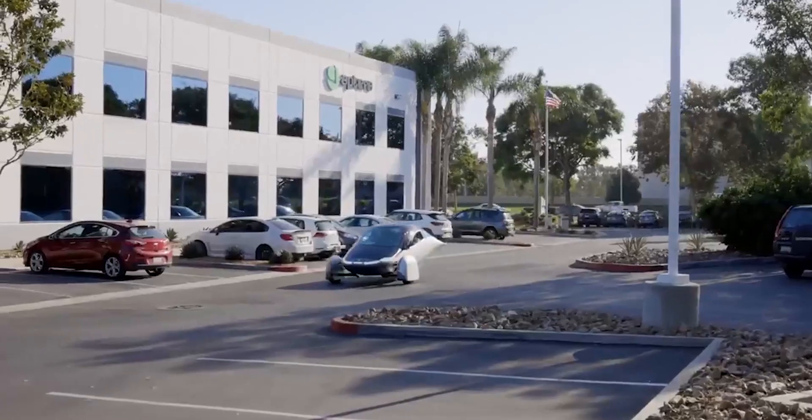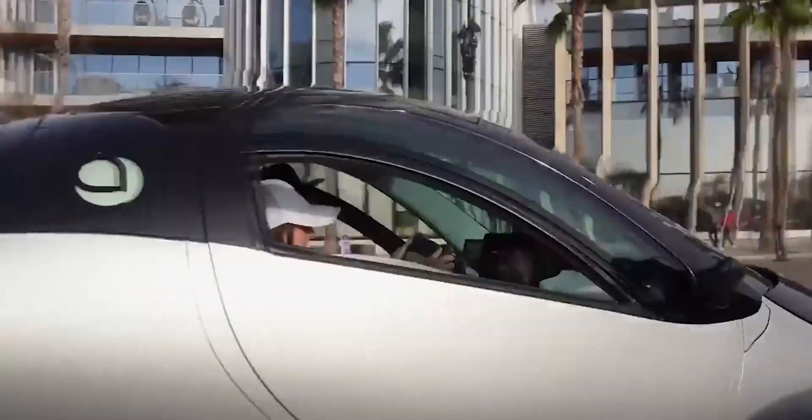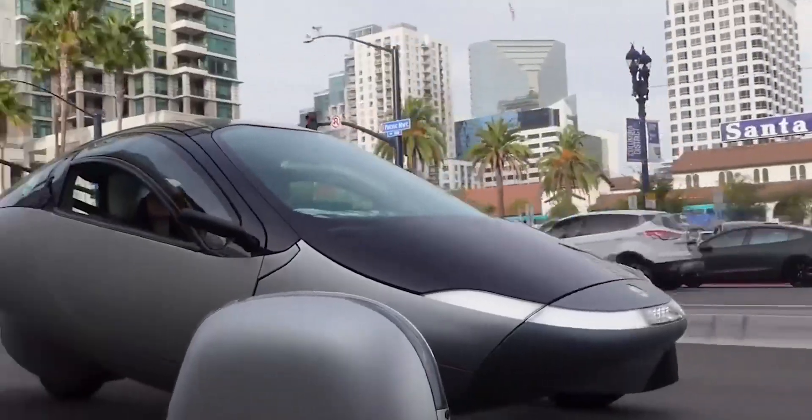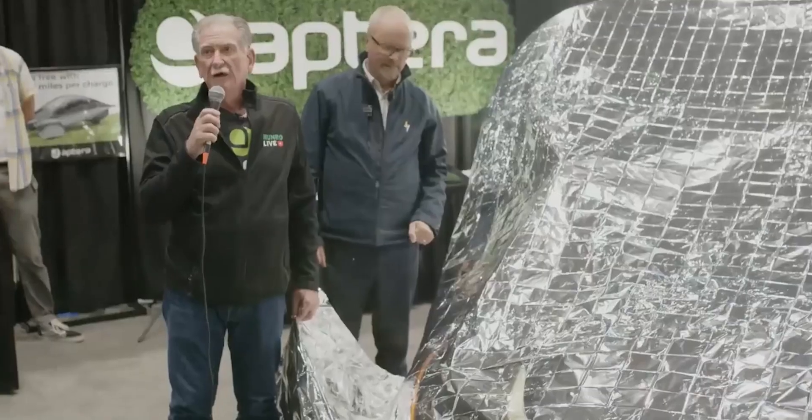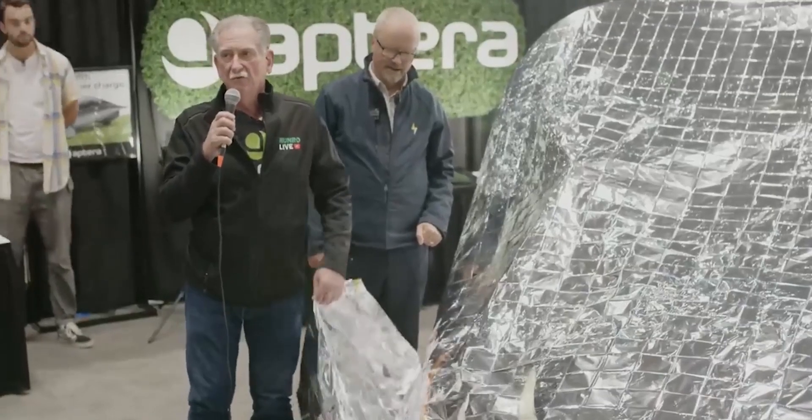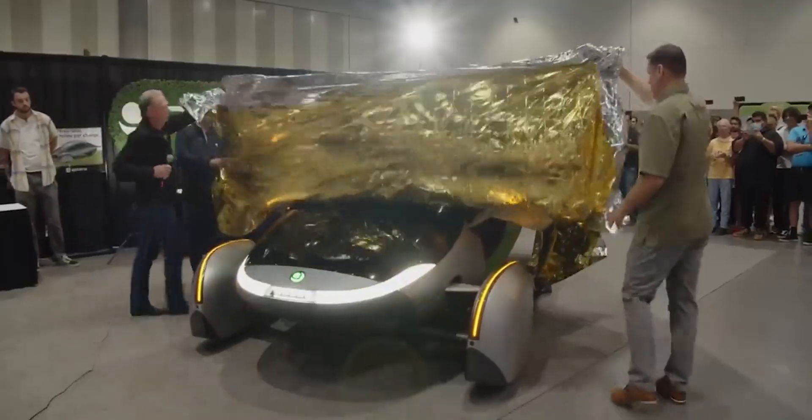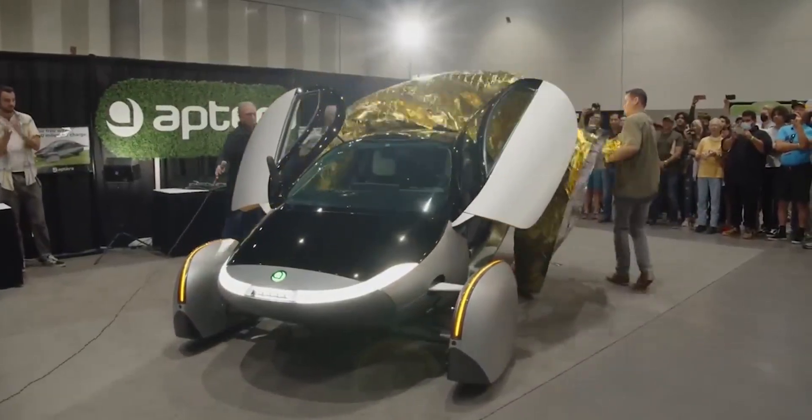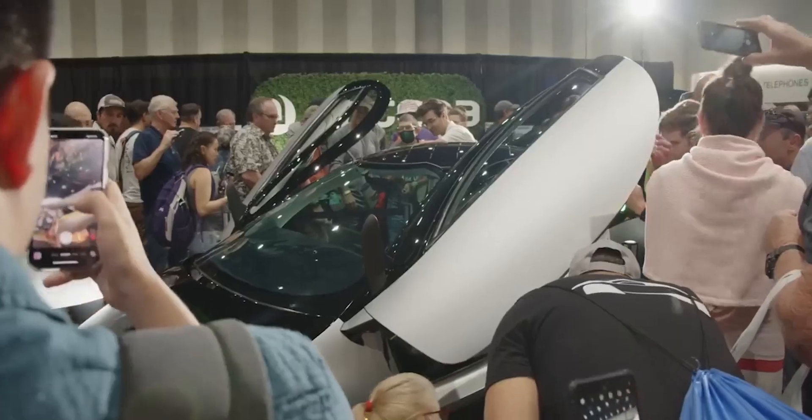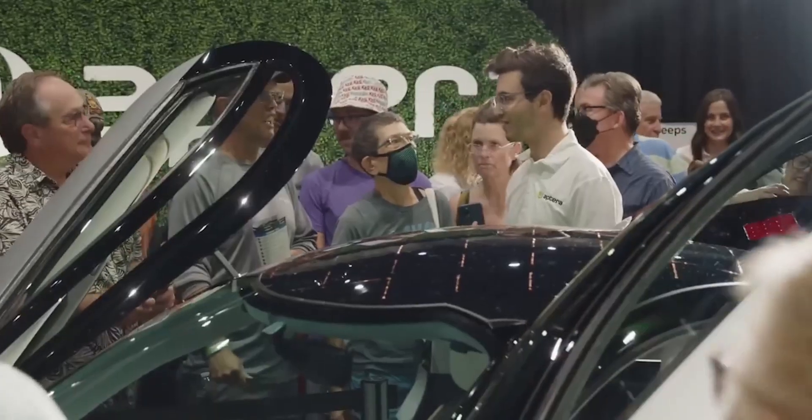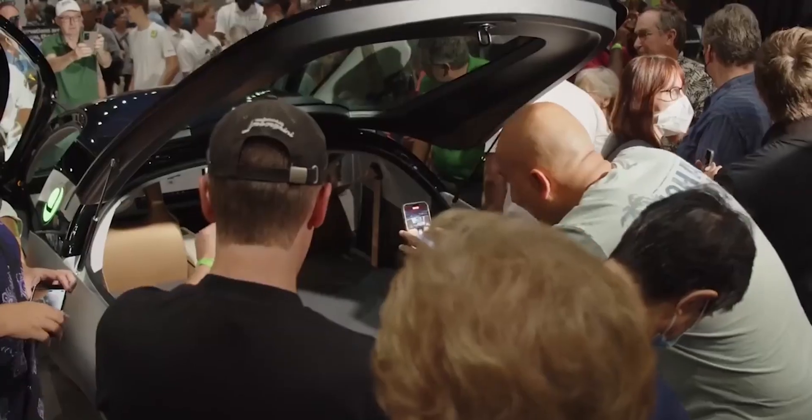But solar technology continues to advance just like battery technology. Today's solar cells on the mass market top out at around 24% efficiency, with 30% efficient cells coming in the near future. That means there's a lot more energy that solar cells could capture in the future as the technology continues to improve. At 40% efficiency, which is something that's in development at the moment, the power you can get from a car's surface will double. If they can get as far as 90% efficiency, for example, a vehicle like the Aptera could add almost 120 miles of range on a good day.